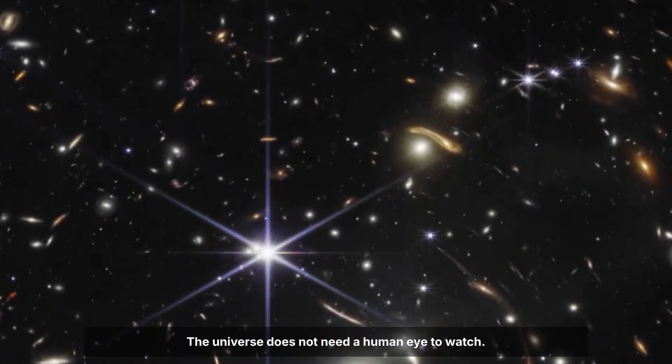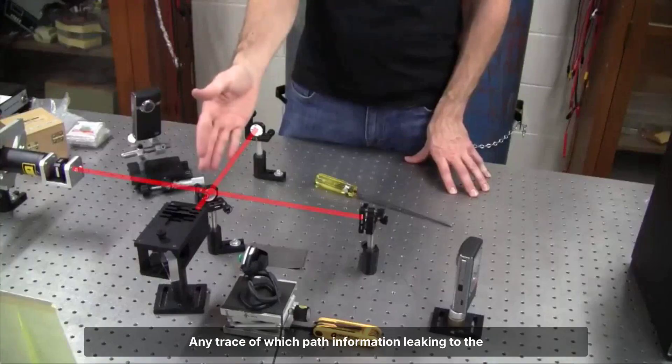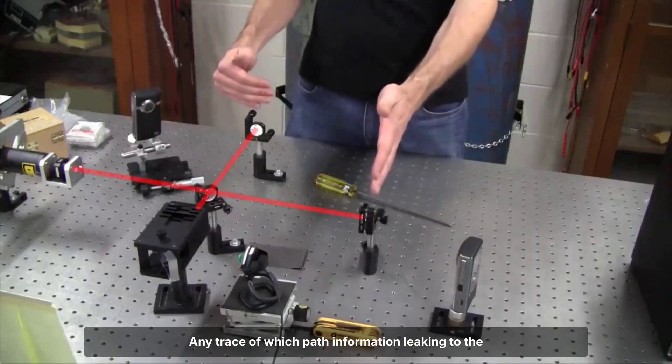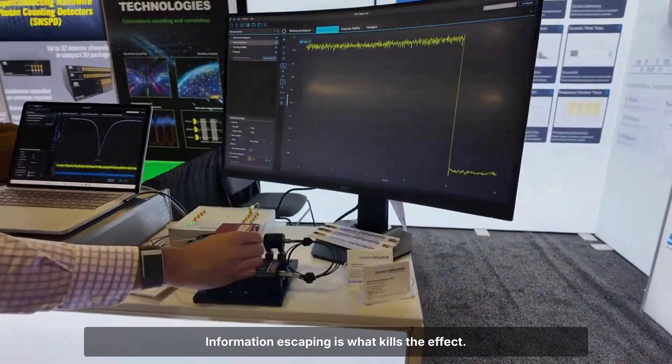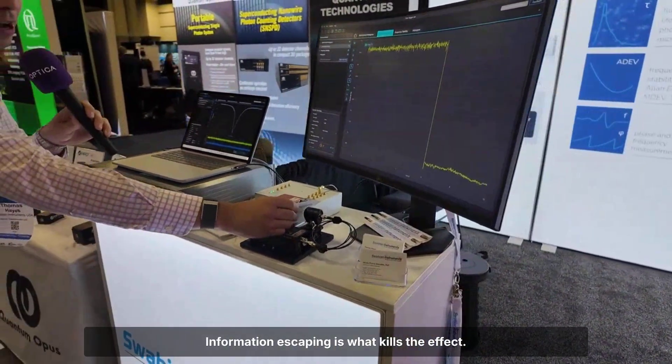The universe does not need a human eye to watch. Any trace of which-path information leaking to the environment is enough. The moment the environment could, in principle, know which slit the photon traveled through, the pattern dies. Information escaping is what kills the effect.